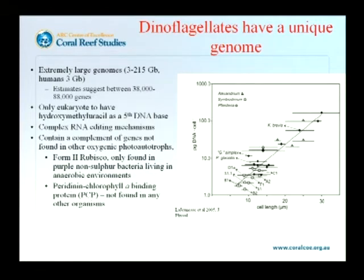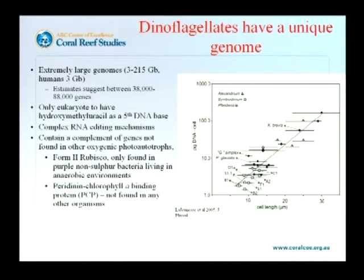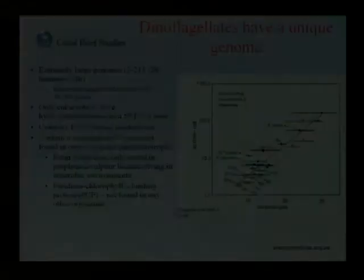Complicating matters even further, these organisms actually use five DNA bases as opposed to four — they have a modified base pair. They have very complex RNA editing mechanisms. And what we knew about the gene complement of symbiodinium and dinoflagellates when we started is that they have complex genes not found in other normal photoautotrophs. For example, rubisco — the protein involved in carbon fixation — is not the same as what we find in pretty much every other photosynthetic organism. It matches what we find in purple non-sulfur bacteria that live in hot springs. So they're very strange beasts.